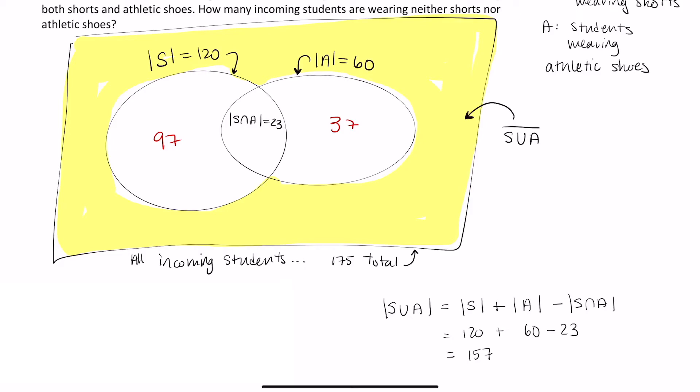Here I have the total number of students wearing shorts, athletic shoes, or both. There's 157 of them. That tells me that this is equal to my total number of students minus this value. So we have 175 minus 157, and that is 18. In here, there are 18 students total in that yellow region. That tells me there are 18 students that are neither wearing shorts nor athletic shoes.